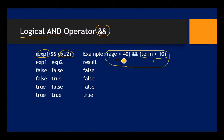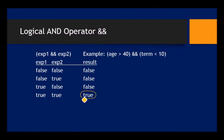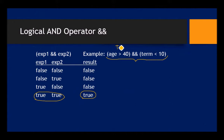Any other combination of true-false inputs results in false output with AND. So in our example, the entire expression will be true only if 'age greater than 40' is true AND 'term less than 10' is true. If either side is false, or both sides are false, the entire expression is false.